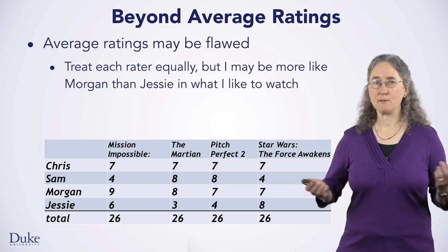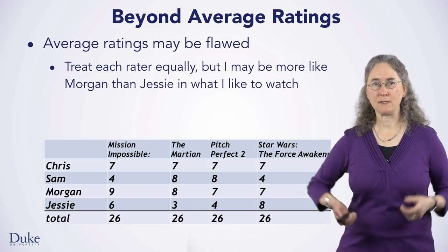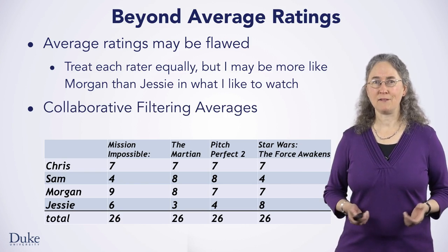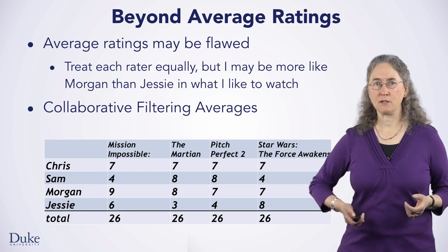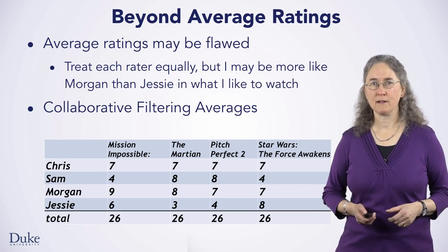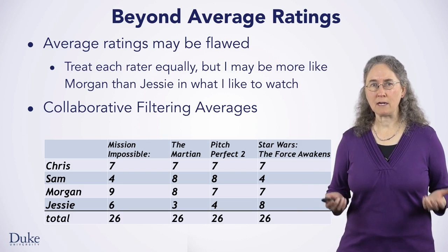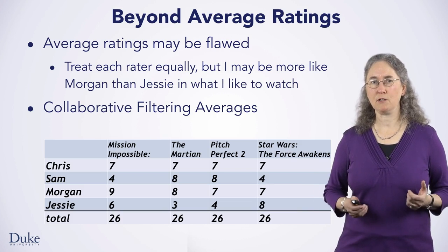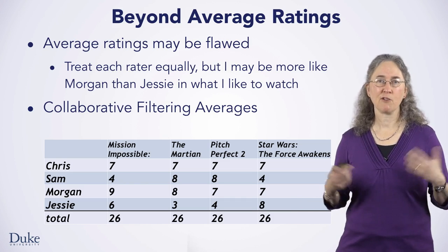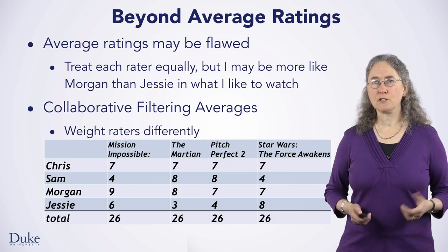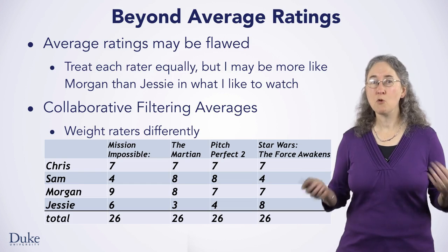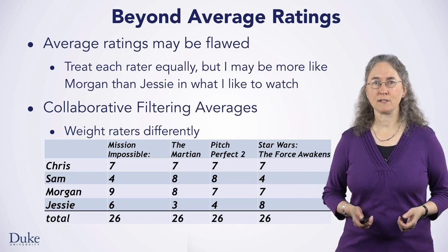For you, Sam's ratings might be better for creating recommendations. This is the idea behind a different kind of average or recommendation, one called collaborative filtering. The idea is to create recommendations specific to a user or rater, rather than the same recommendations for all users. To do this, you'll weight raters differently, valuing those raters who are more like you in calculating averages.